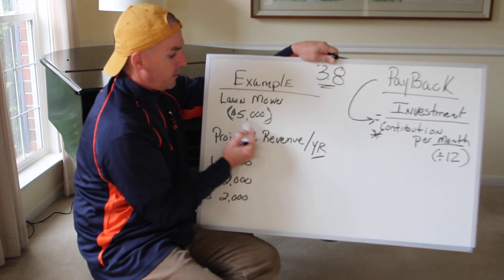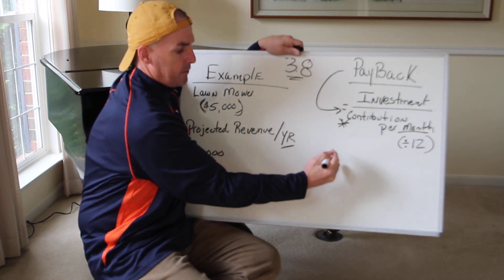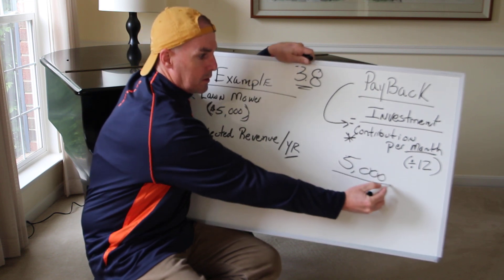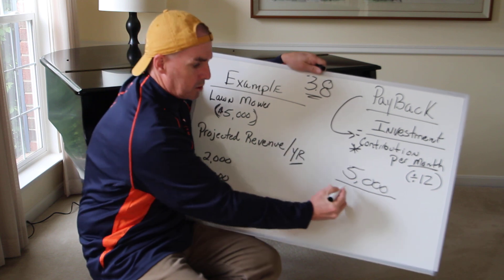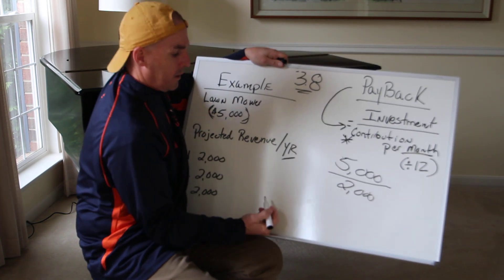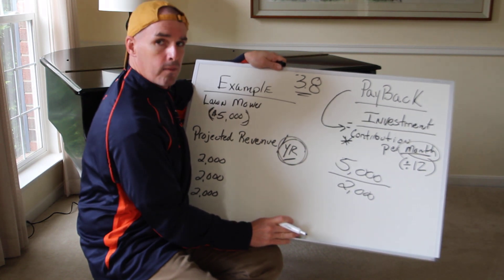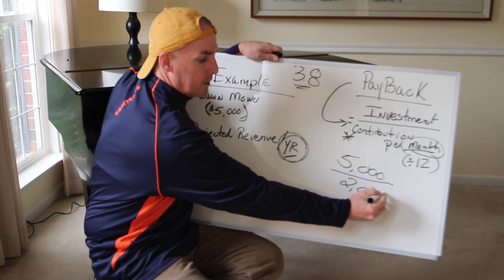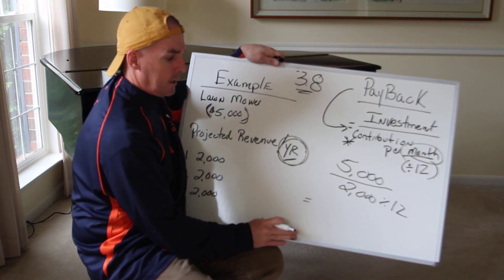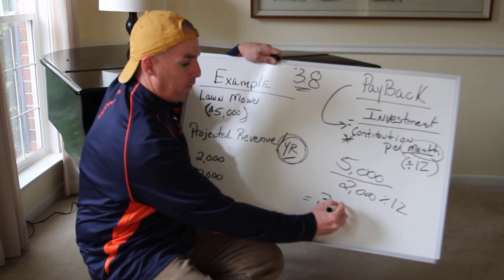So if we do the math for payback — when am I going to get that $5,000 back? I take my investment of $5,000 divided by the contribution of $2,000. We want to know per month, so since that $2,000 is per year we divide by 12, and the math gives us somewhere around 30 months — that's when you're going to get your money back.